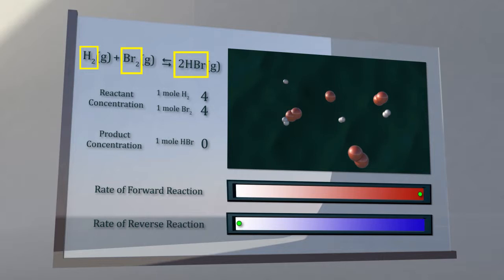As the forward reaction proceeds, the concentrations of hydrogen and bromine gases decrease, and the concentration of hydrogen bromide gas increases. Once hydrogen bromide gas is present in the vessel,